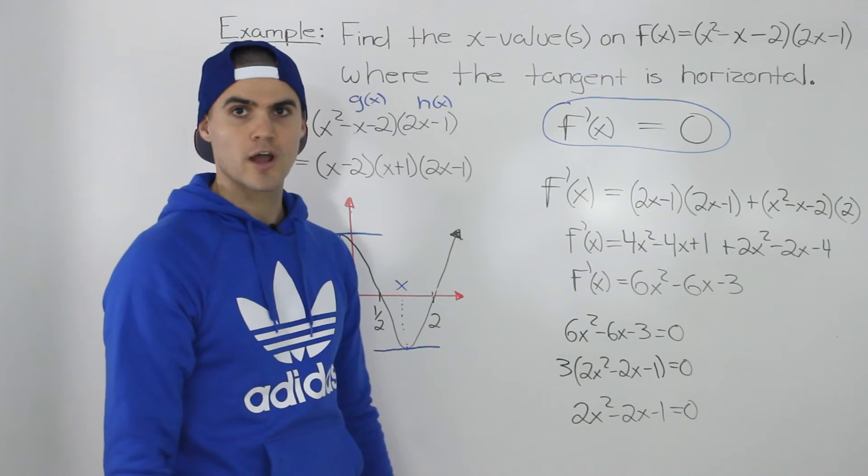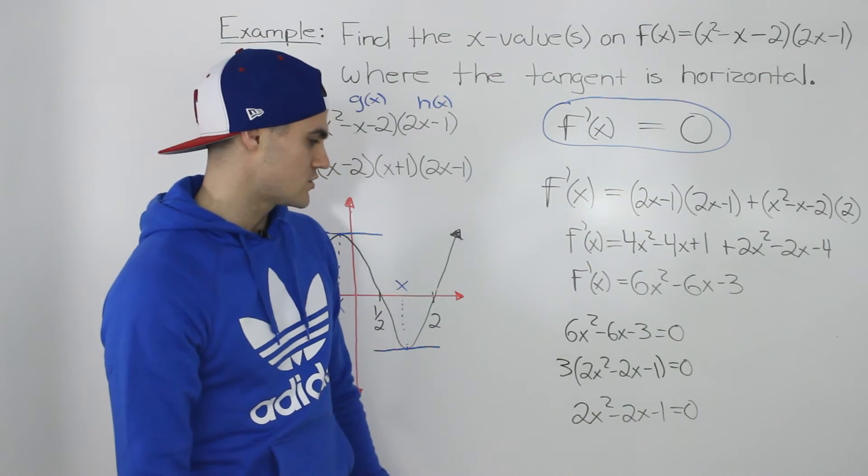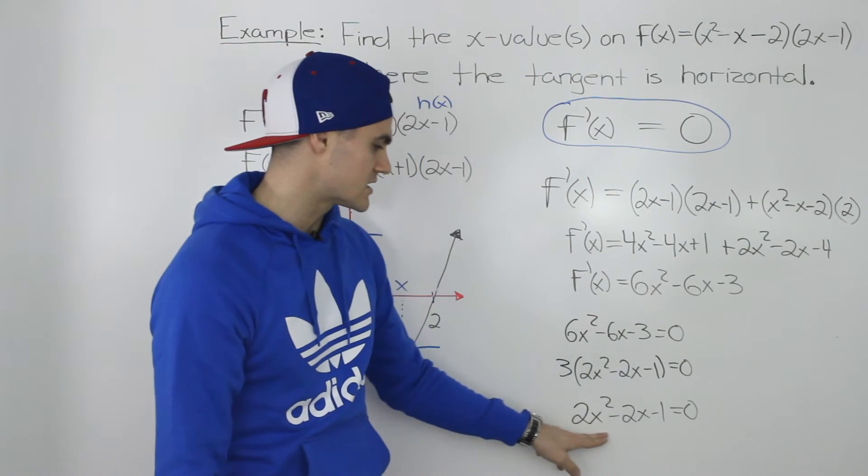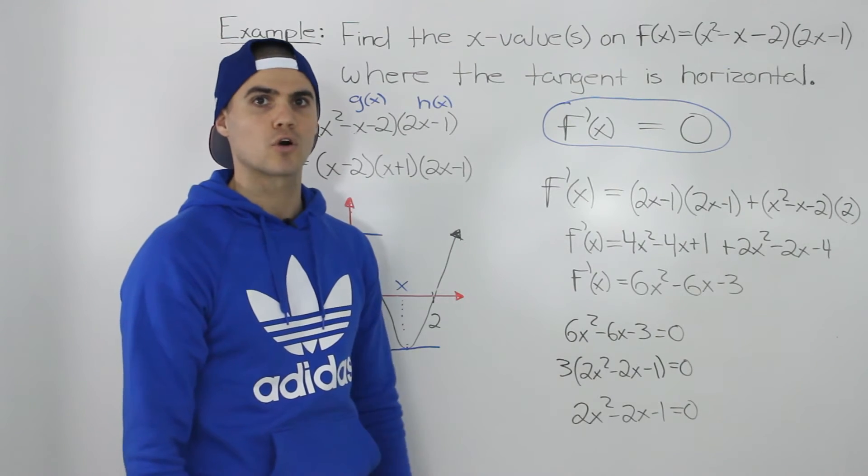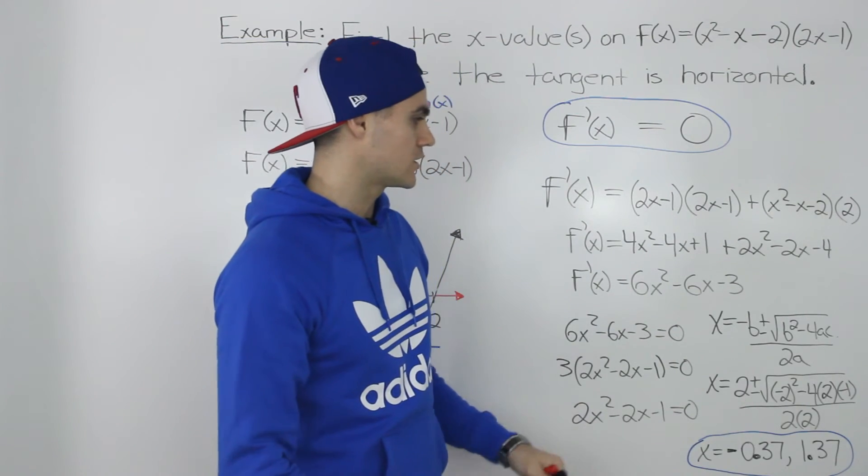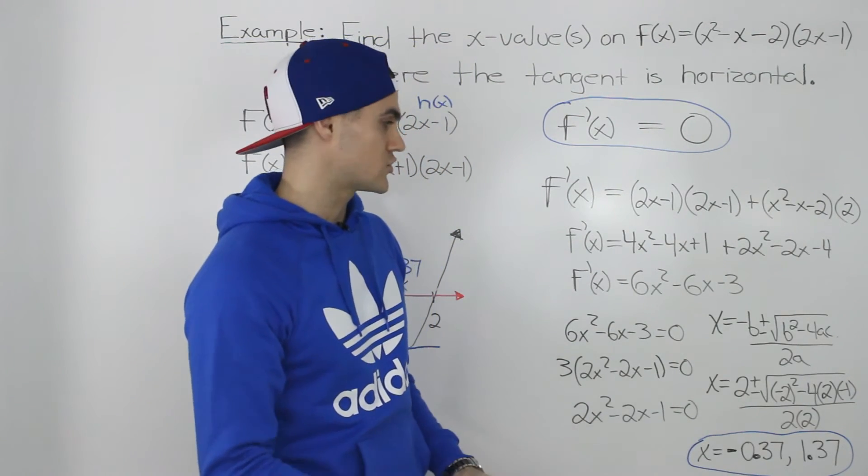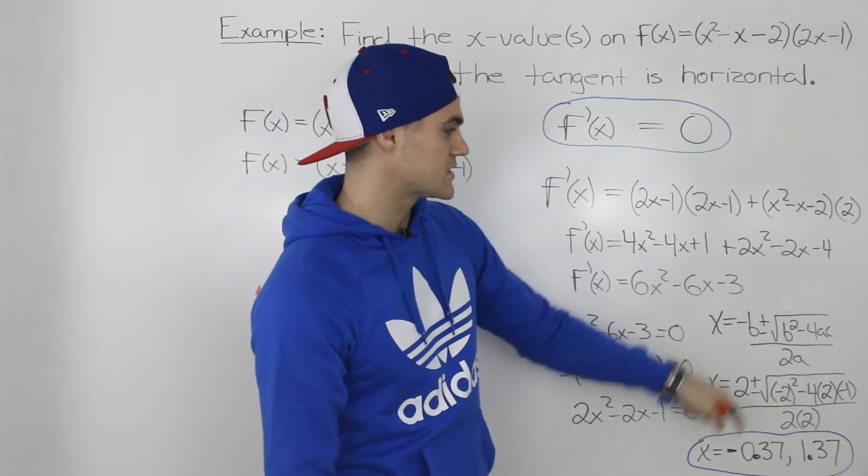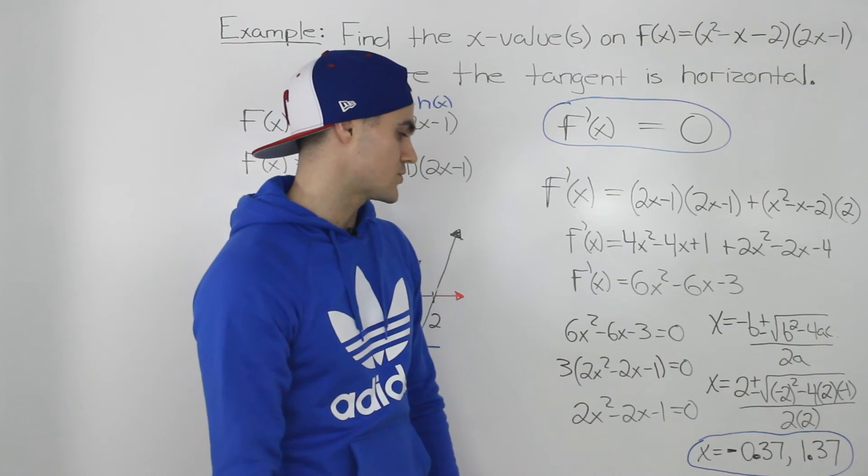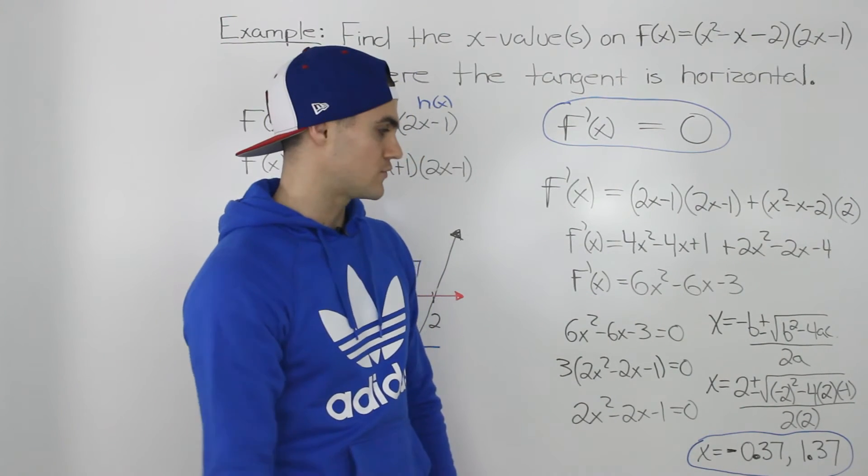So this is just a quadratic equation. First thing you check, can you factor this? And unfortunately, it doesn't look like this will factor smoothly. So we're going to have to use the quadratic formula. So then taking that quadratic equation and putting it into the quadratic formula, the quadratic formula being negative b plus or minus b squared minus 4ac all over 2a. You may have to go back and review that.